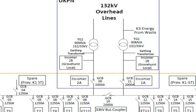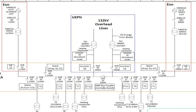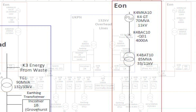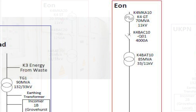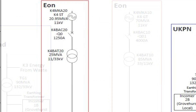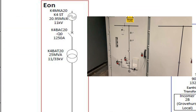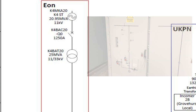If only one side incomer is opened but the bus coupler is opened, then the generator associated with that side of the board has to be opened. This is achieved at the 11kV level with the opening of the generator circuit breakers K4BAC10 for the GT or K4BAC20 for the steam turbine.